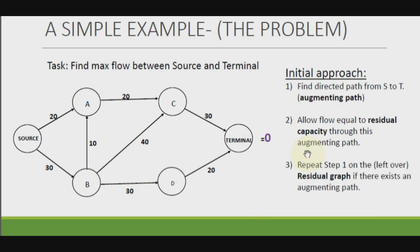Our goal is to find a maximum flow between the source and the terminal. One approach is to choose a path from source to terminal, allow flow through it, and repeat this until no more flow can be pushed. Let's try this and see what happens and what problems we face.